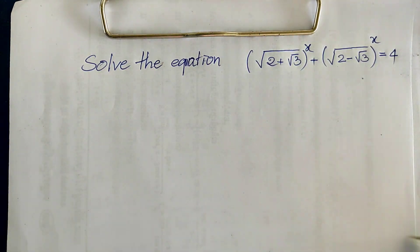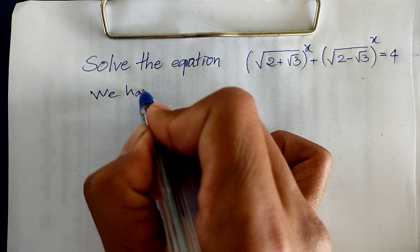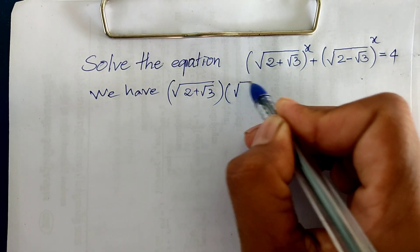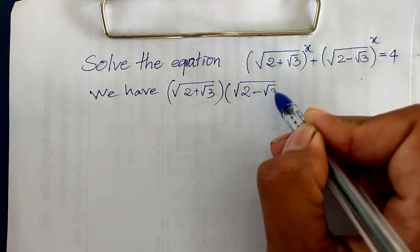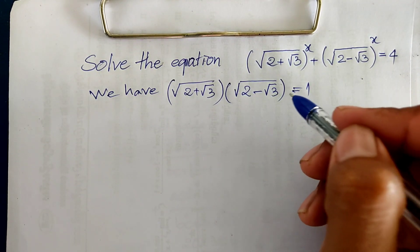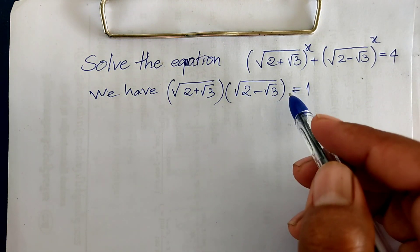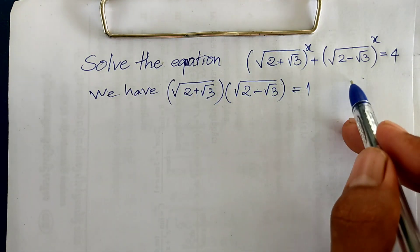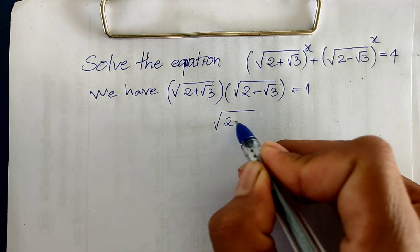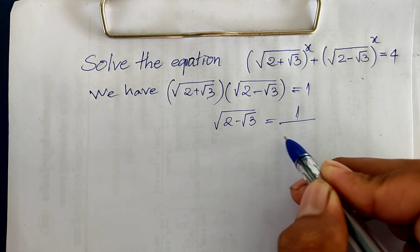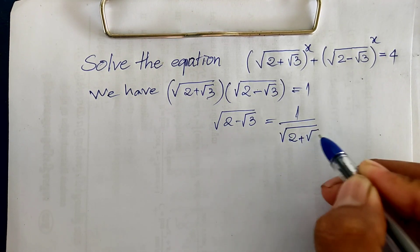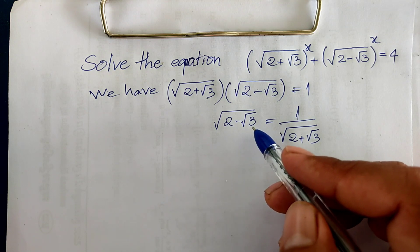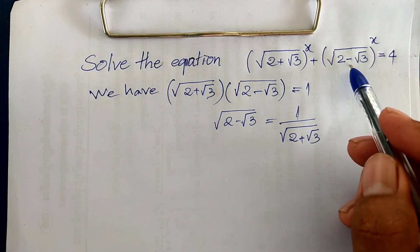Now we use this trick to work with our equation. We have square root of 2 plus square root of 3 multiplied by square root of 2 minus square root of 3 equals 1. So we have two factors equal to 1. Moving one factor to the right side, we get square root of 2 minus square root of 3 equals 1 divided by square root of 2 plus square root of 3. Now I have square root of 2 minus square root of 3, so I replace it in the original expression.